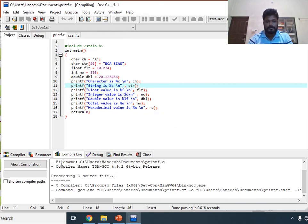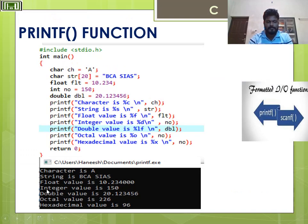You will get the result like this: character is A, string is BCA SIAS, float value is 10.234, integer value is 150, double value is 20.123456, octal value is 226, hexadecimal value is 96. This is about printf function.